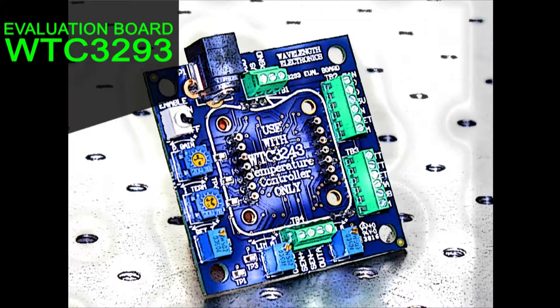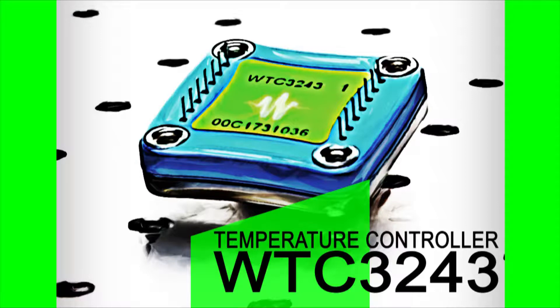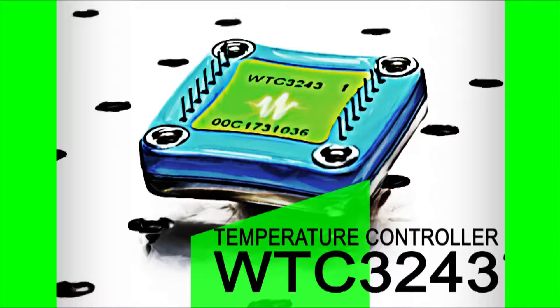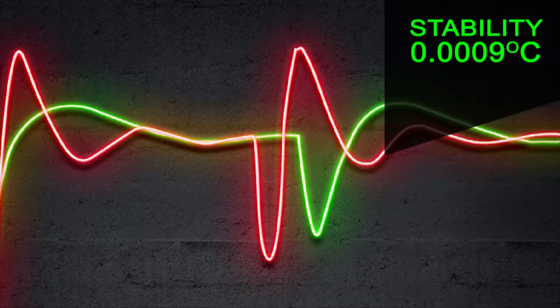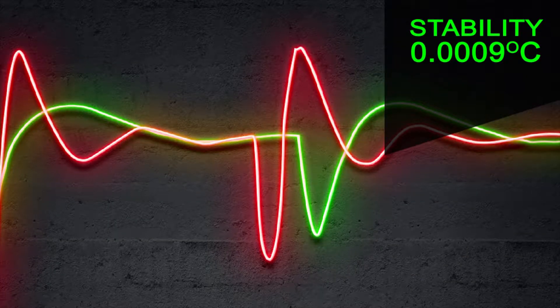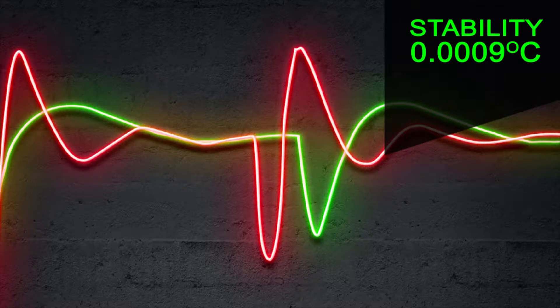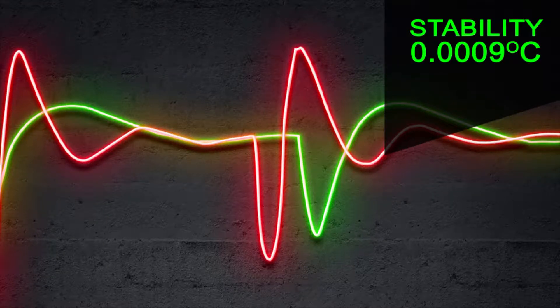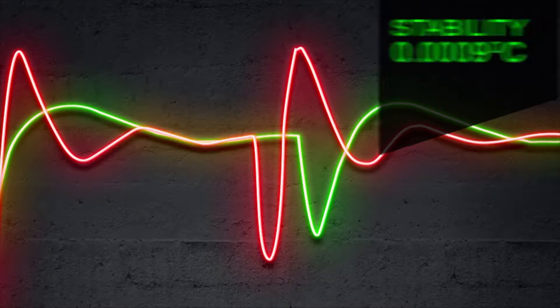Use the WTC3293 evaluation board to rapidly prototype a precision temperature control system using the WTC3243 temperature controller. The WTC is a compact analog proportional integral control loop that easily handles variable operating conditions with a stability better than 0.0009 degrees C.